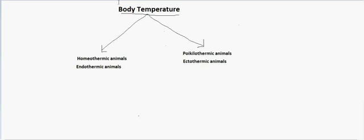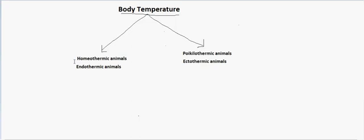Before we discuss whether they are the same or different, let us first understand what homeothermic and poikilothermic animals are. Homeothermic animals are basically animals which are able to maintain a constant body temperature irrespective of the temperature of the surroundings — like birds and mammals. Birds and mammals are the only two classes in the whole animal kingdom which can maintain their own internal body temperature irrespective of external temperature.